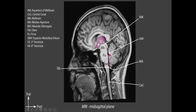At the obex, you can identify the third ventricle, midbrain, pons, medulla, fourth ventricle, superior medullary velum, inferior medullary velum, median aperture, central canal, and the aqueduct of Sylvius. This narrowing between the fourth ventricle and central canal is called the obex.